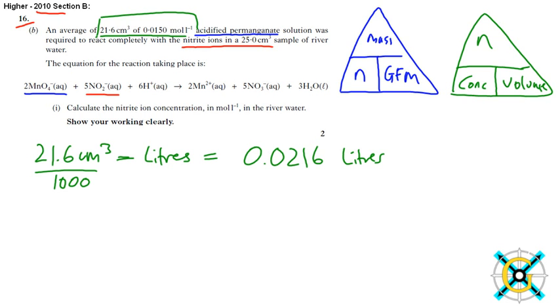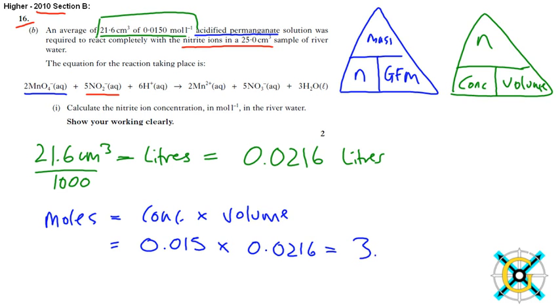So the number of moles is equal to 0.0150 times 0.0216. Therefore, the number of moles is equal to 3.24 times 10 to the minus 4 moles.